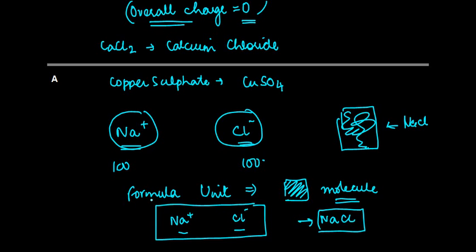In other words, the minimum quantity of each ion required to form one unit of the ionic compound is known as the formula unit.